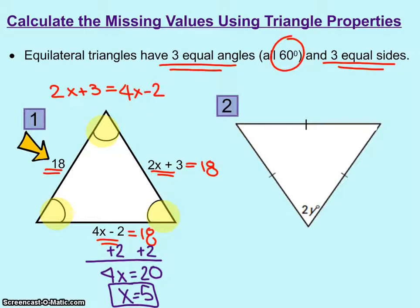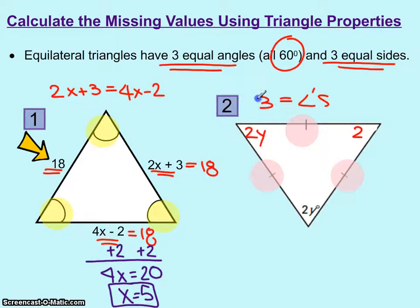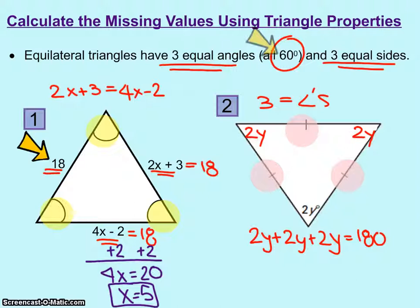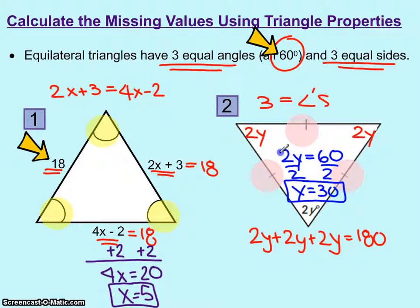Looking at example 2, we have congruent marks on the top, right, and left sides. So we know that we have three equal angles. You can take 2y and set it equal to each angle: 2y plus 2y plus 2y equals 180. Or, since all angles must be 60 degrees, you can simply take 2y and set it equal to 60. In either case, you will get y equals 30.